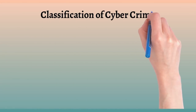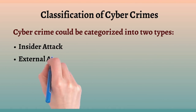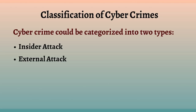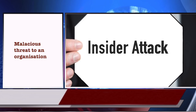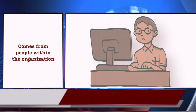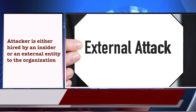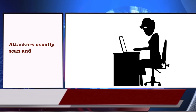Let us now classify cybercrimes. The cyber criminal could be internal or external to the organizations facing the cyber attack. Based on this, cybercrime could be categorized into two types: insider attack and external attack. An insider threat is a malicious threat from people within the organization such as employees, former employees, contractors or business associates who have inside information concerning the organization's security practices, data and computer systems. When the attacker is external to the organization, they usually scan and gather information.